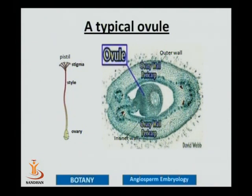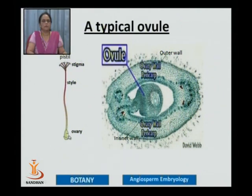A unit of the gynoecium is known as a pistil. A typical pistil has a stigma, a style, and the ovary which is the basal portion. The ovary is actually the fertile portion. The style is for pollen tube growth and the stigma is the seat of the pollen grains.